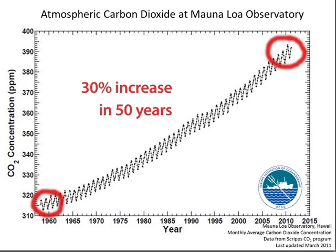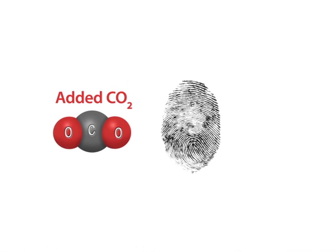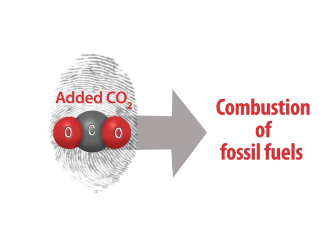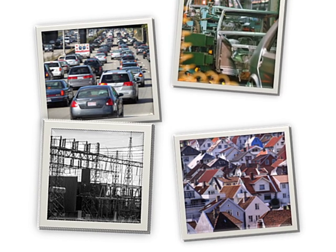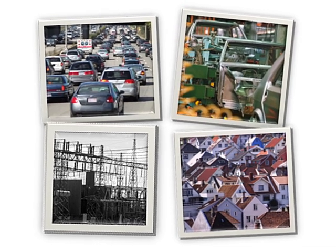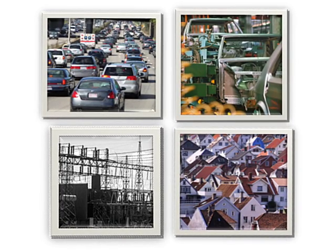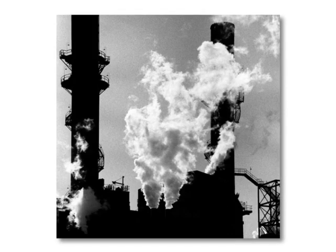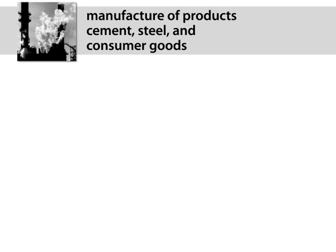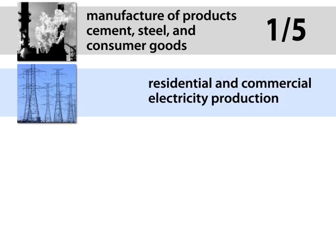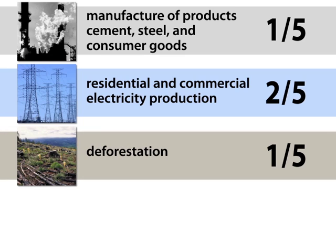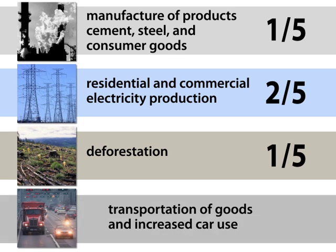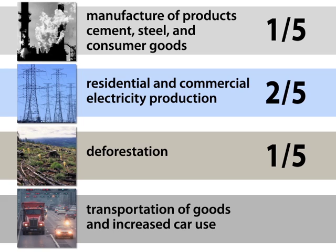The source of the increased CO2 levels is us. We know this because the added CO2 carries with it chemical fingerprints that very clearly point to the combustion of fossil fuels as the primary contributor of the additional carbon dioxide being added to the atmosphere. We use fossil fuels to generate electricity, power our vehicles, heat our homes and offices, and power much of our industrial economy. Globally, heavy industry — for example, the manufacture of products like cement, steel and consumer goods — accounts for nearly one-fifth of the CO2 addition. Residential and commercial electricity production accounts for roughly two-fifths. Deforestation accounts for another fifth, as lost forests no longer take up CO2 from the air. The transportation of goods between and across continents and increased automobile use account for most of the remainder.